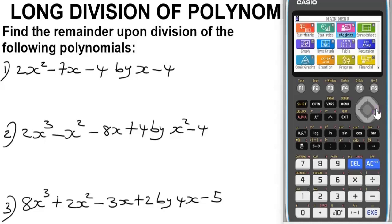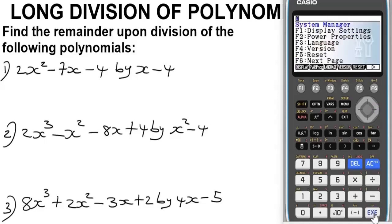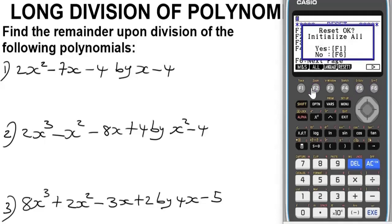To quickly reset it or clear it, all you have to do is navigate to the system using this navigation box. Press F5 for reset, then press F6 for next page, and lastly press F2 to initialize or F1 to initialize, and it will begin to initialize.